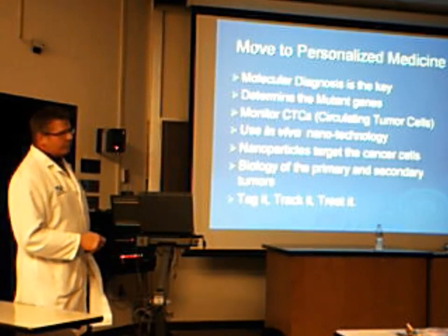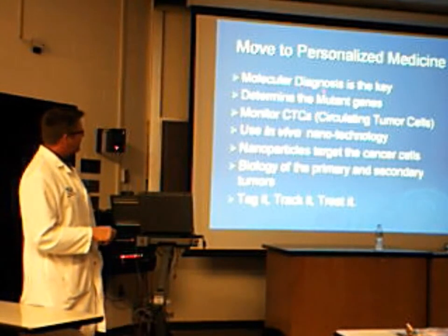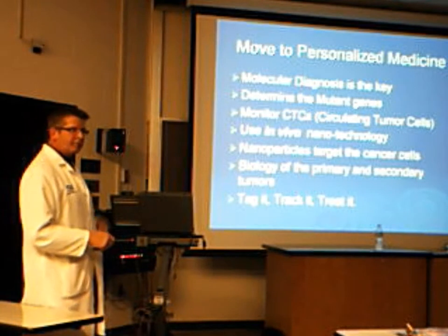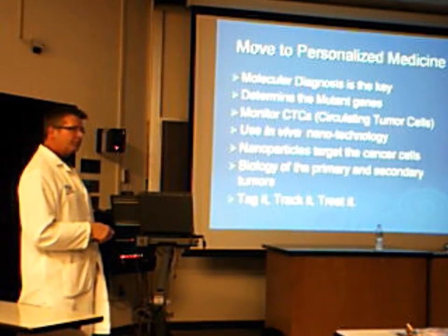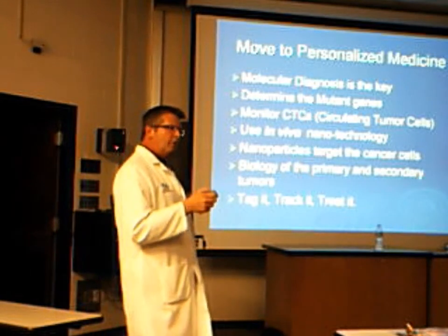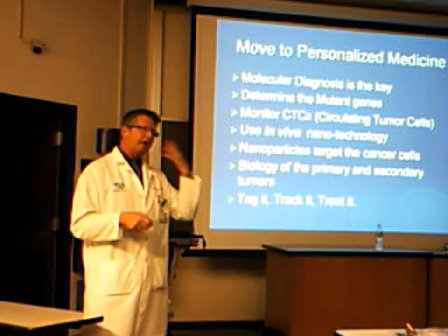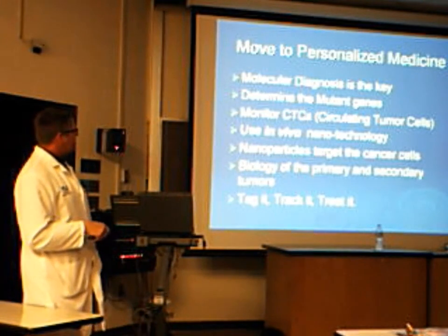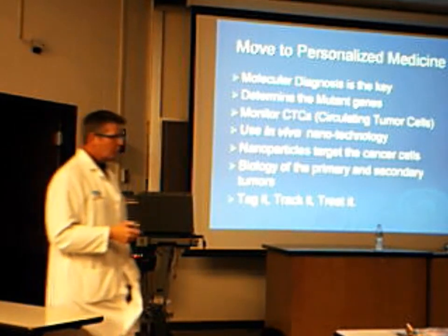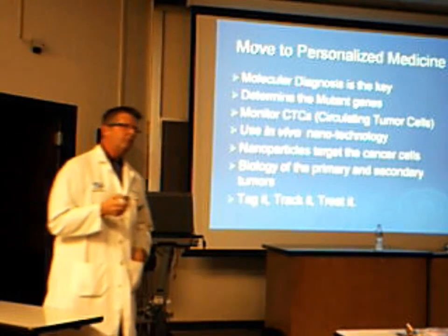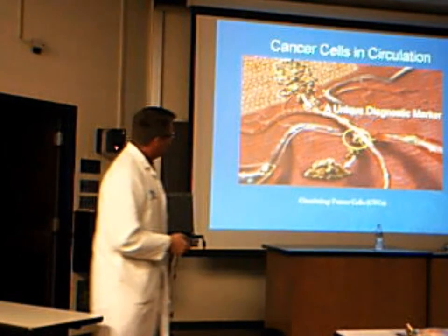So this is what we want to do — we want to move with circulating tumor cells, move to more personalized medicine. We want to take these circulating tumor cells and understand the molecular aspects of them. We want to determine the genetic makeup of the tumor cells because that will help us determine how aggressive they're going to be. We want to monitor circulating tumor cells from the time the patient is diagnosed, baseline them, and then follow them every three to six months to see when they develop circulating tumor cells, because that's going to help us in our treatment modality. I'm going to go over the in vivo nanotechnology that we're developing.